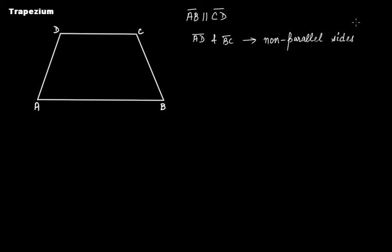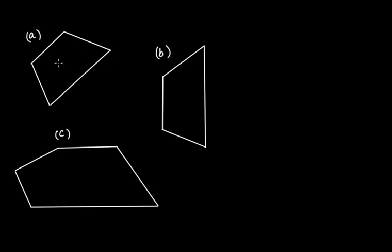So if in a quadrilateral one pair of opposite sides is parallel and another pair of opposite sides is non-parallel, that quadrilateral is a trapezium. It's a quadrilateral because it has four sides, and it's a trapezium because it has only one pair of parallel opposite sides while the other pair is non-parallel.